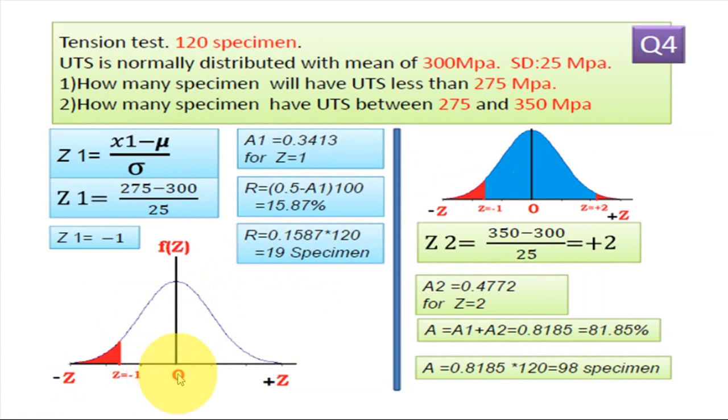So this is the area 0.3413 is from 0 to z equal to minus 1. Now our objective, we have to find out the specimen having ultimate tensile strength less than 275 MPa. So our interest is in this area less than 275, means less than minus 1. So our this red area is our area of interest. Area from 0 to minus z is 0.5.